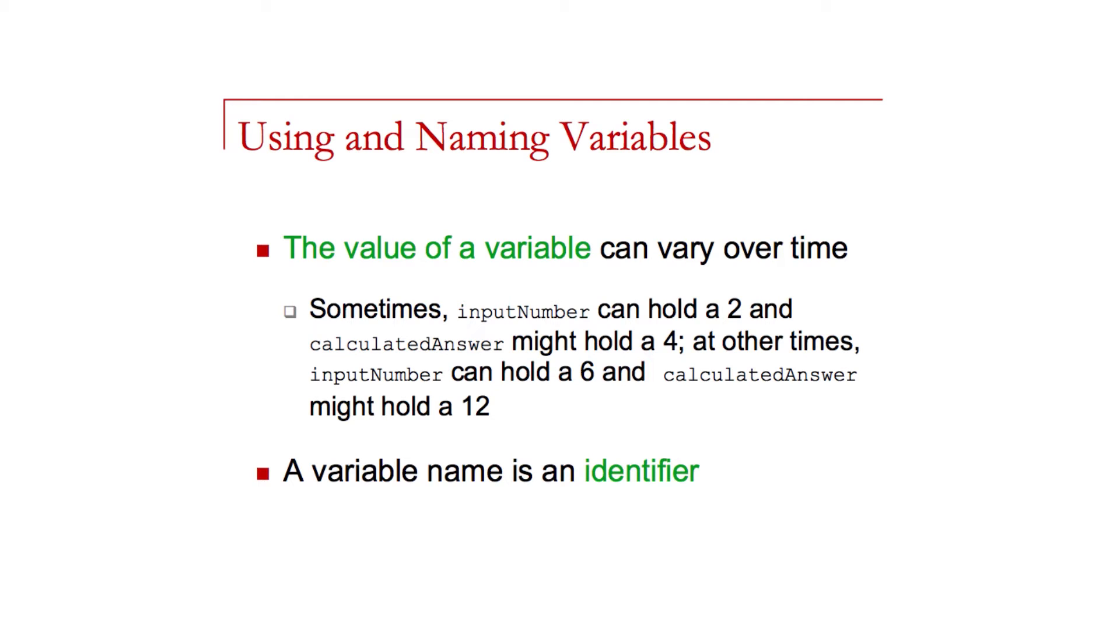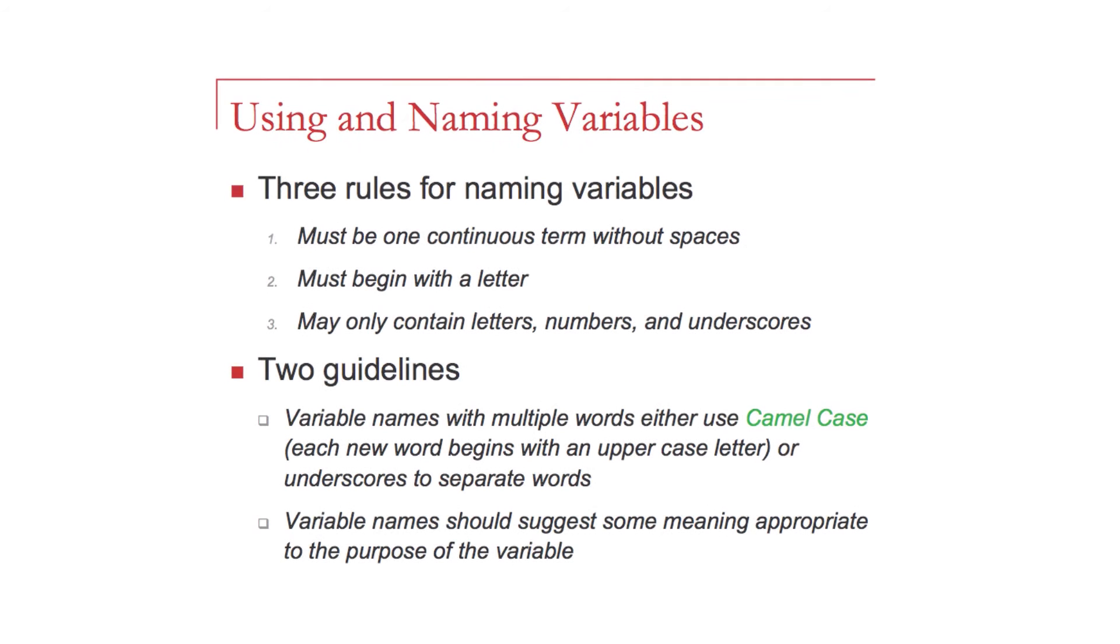So a variable name is just an identifier representing that place in memory where I'm holding the values that my program might need. The way that we name a variable is very important. The variable must have a continuous sequence of letters and numbers or punctuation characters without spaces. We usually must begin with a letter and the rest of the variable can be named with other letters, numbers, and underscores. This often depends upon the language, but in general, that's the rules that we can use in terms of writing the names of our variables.